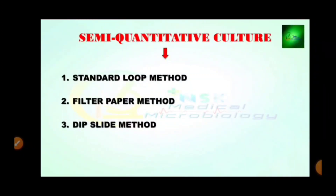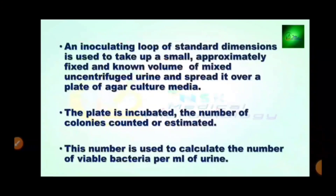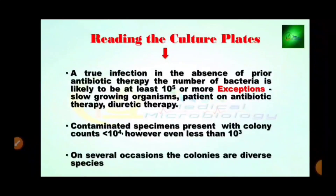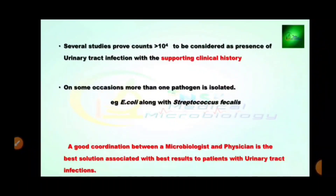For semi-quantitative culture, methods include the standard loop method, filter paper method, and dip slide method. An inoculating loop of standard dimensions takes up a small, approximately fixed and known volume of mixed urine and spreads it over a plate of agar culture media. The plate is incubated, colonies are counted or estimated, and this number is used to calculate the number of viable bacteria per ml of urine. A true infection in the absence of prior antibiotic therapy will likely show 10⁵ or more colony-forming units. Exceptions include slow-growing organisms and patients on antibiotic or diuretic therapy. Contaminated specimens present with colony counts less than 10⁴. A count of several diverse species less than 10⁴ may still be considered as presence of UTI with a supporting clinical history.